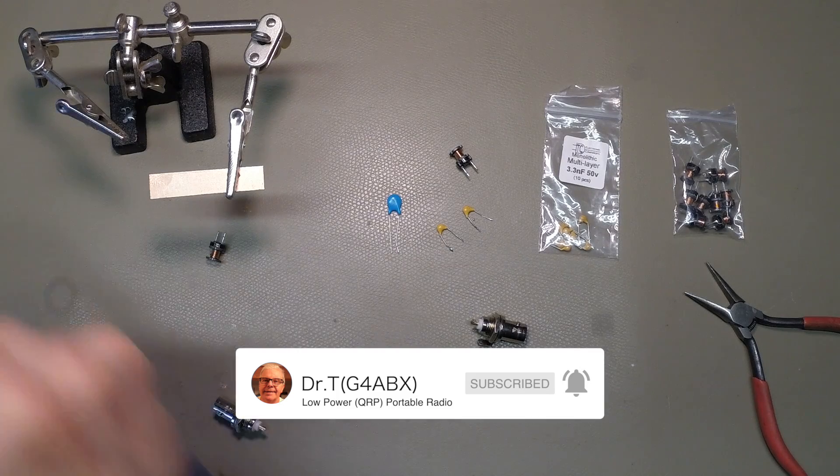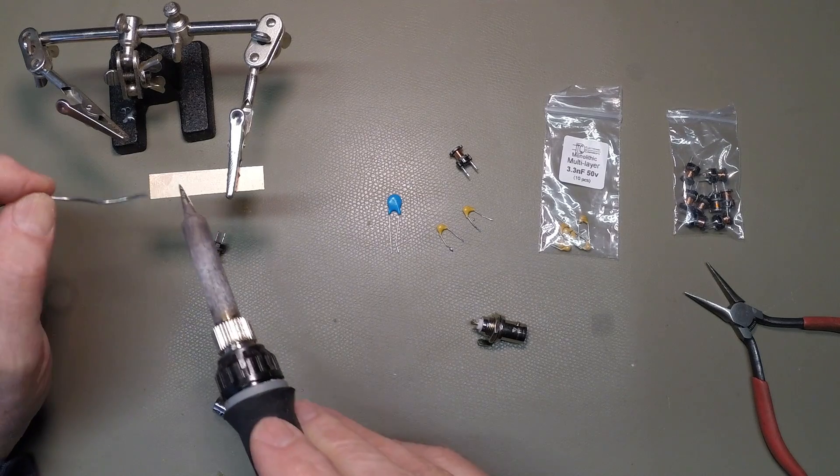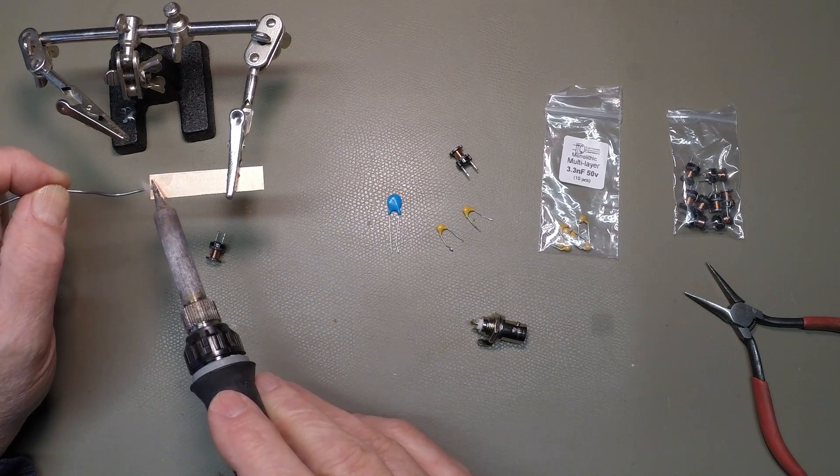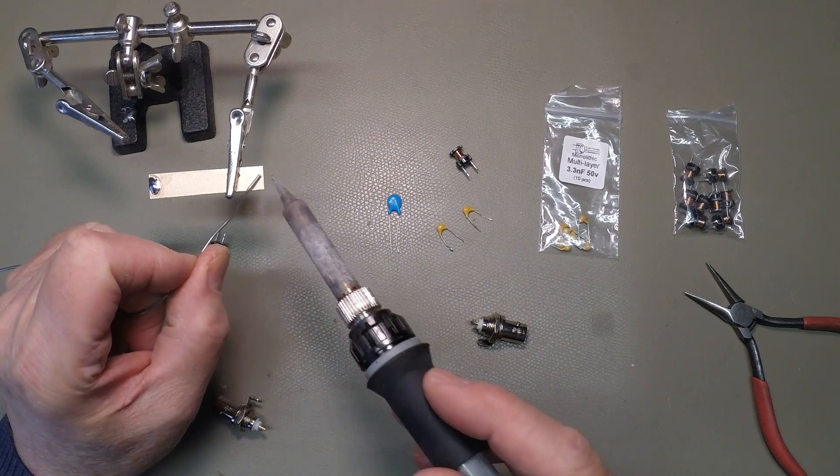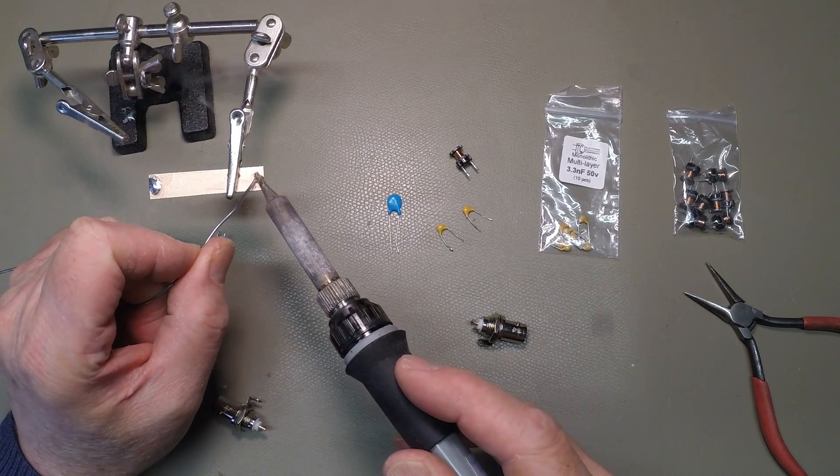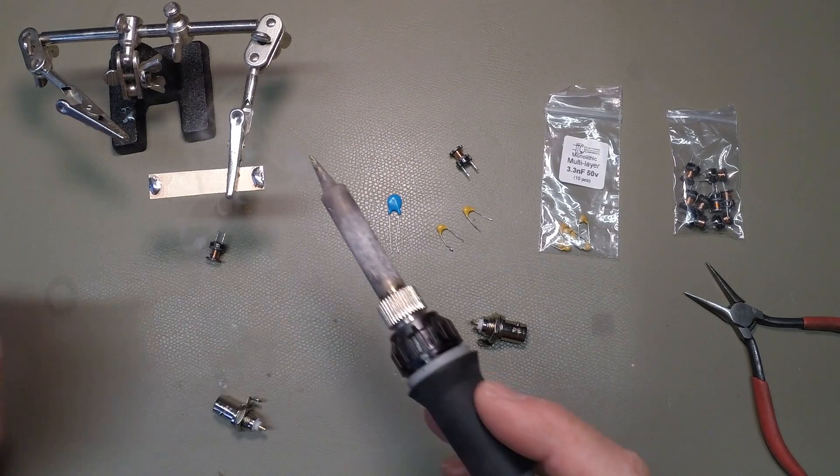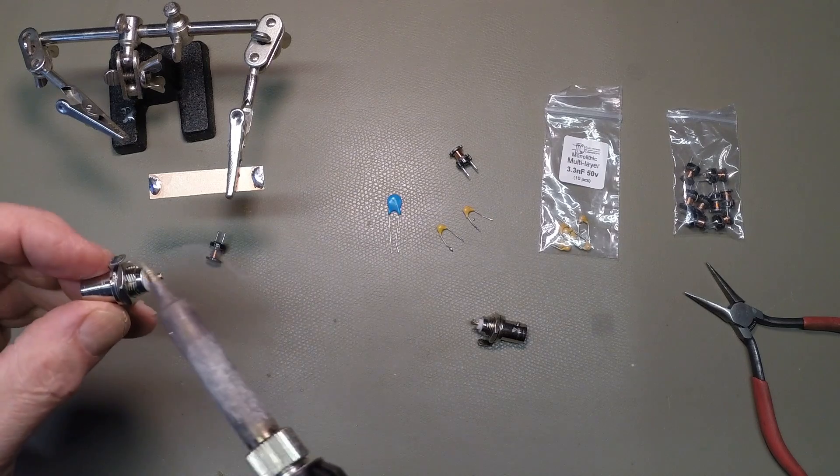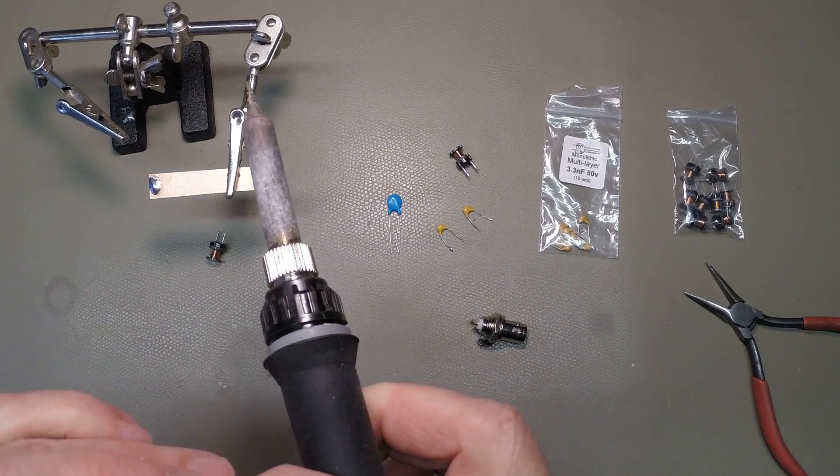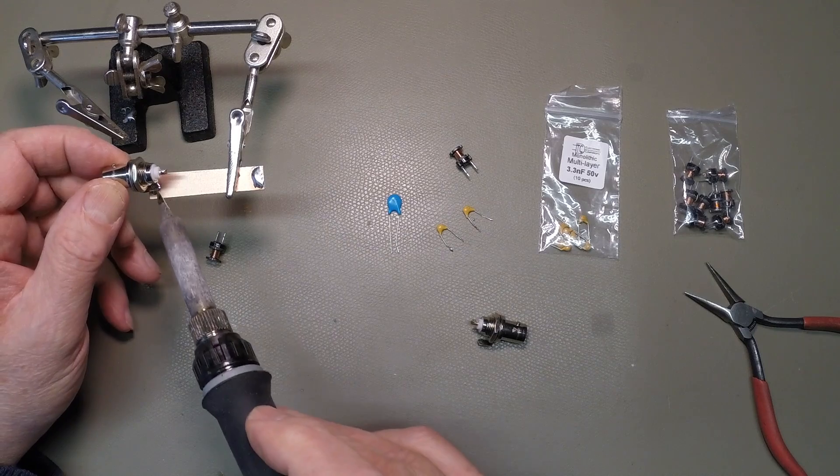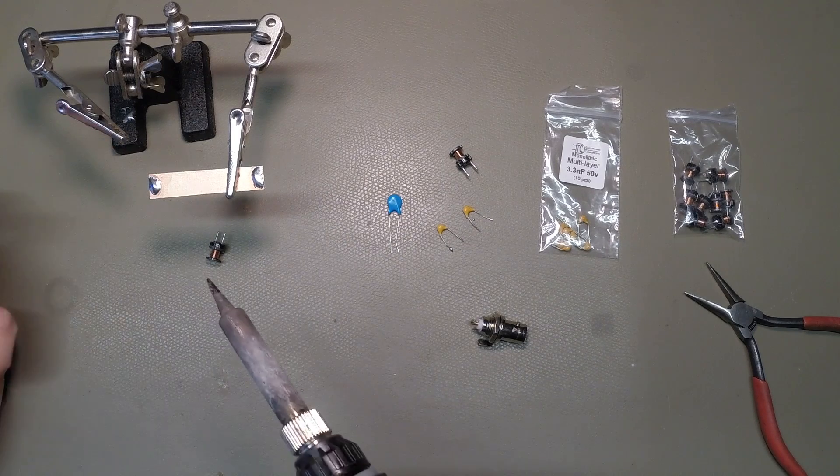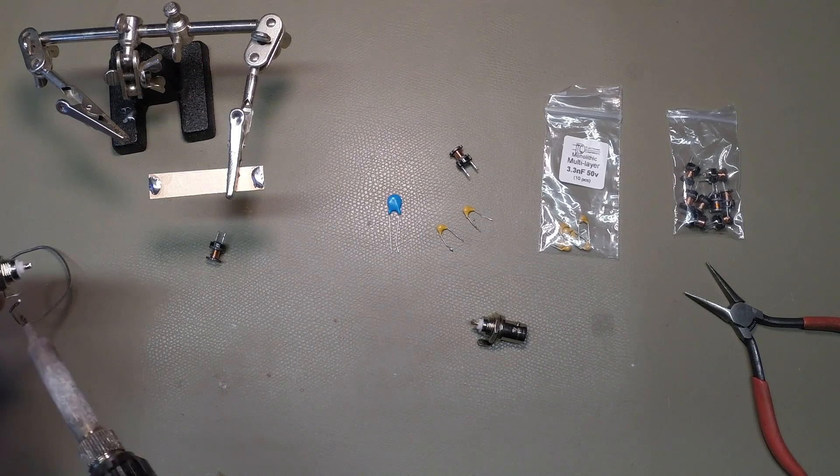Back. Soldering iron powered. I suggest the first thing we do is to actually tin the area of the copper board where we're going to place our sockets. We're going to solder essentially the earth lugs of these sockets. We're not, at the moment, worrying about anything else. So, we just need to apply a bit of solder to tin this.